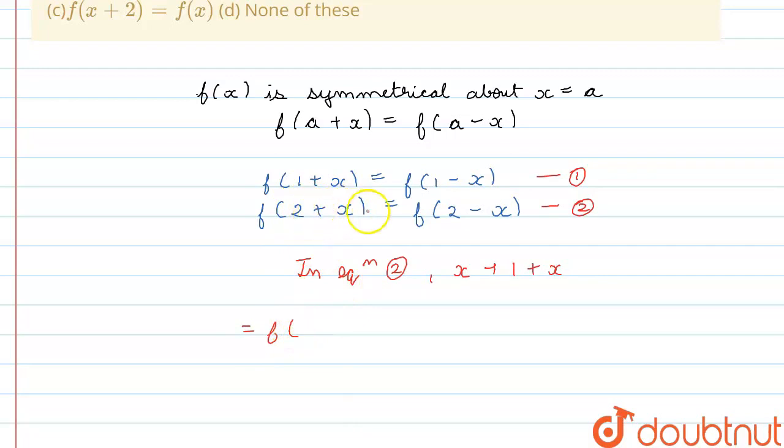so x is replaced by 1 plus x, that is 2 plus 1 plus x and that will solve out to be 3 plus x, and similarly in the RHS part, this will equal 2 minus 1 minus x, so that will be f of 1 minus x. And in equation 1, we have f of 1 minus x equals 1 plus x,